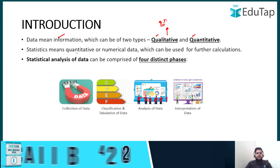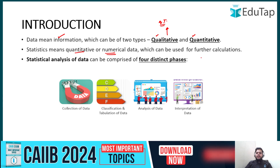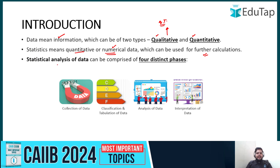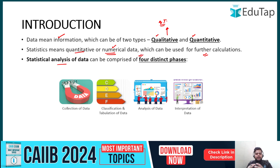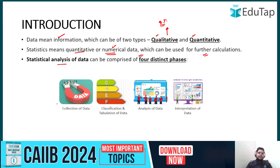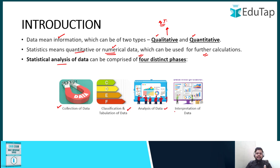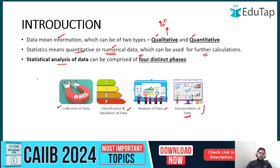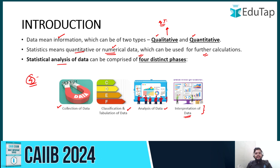In statistics, we obviously talk about numerical data; we do not talk about qualitative data. Statistical analysis of data can be comprised of four distinct phases. The first is collection of data, then classification and tabulation of data, after that analysis of data, and lastly interpretation of data. You should know which phases there are and how many phases there are — four distinct phases for statistical analysis of data.